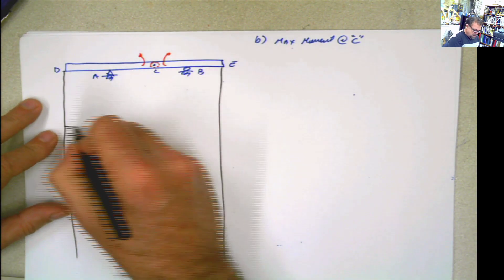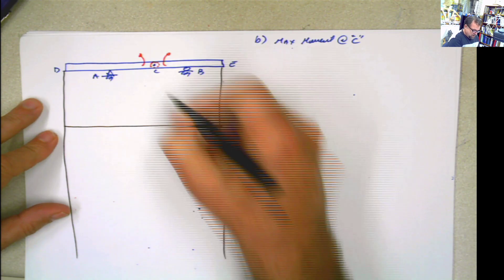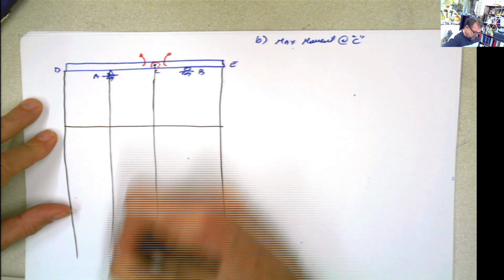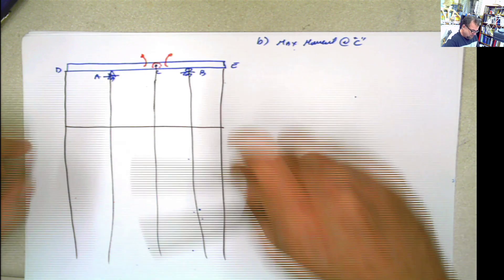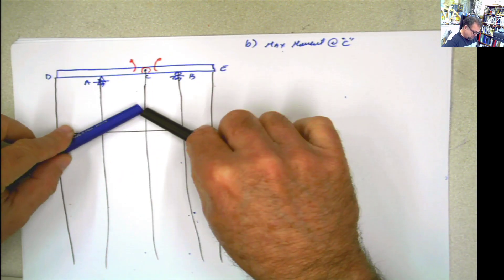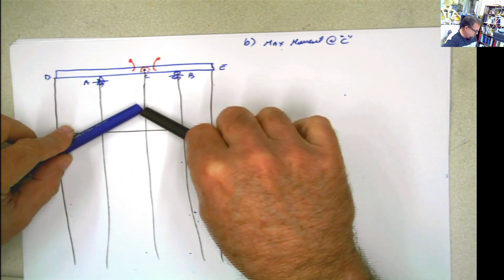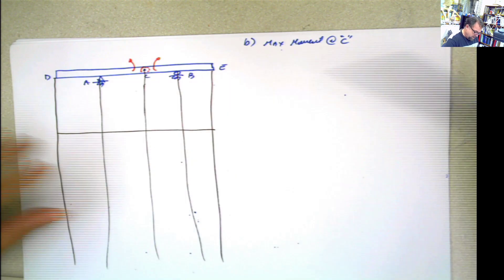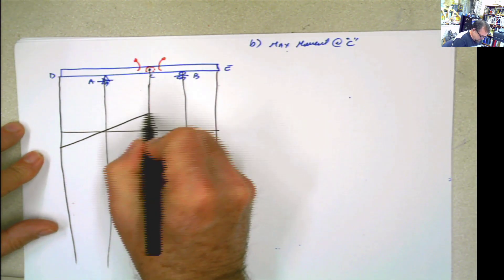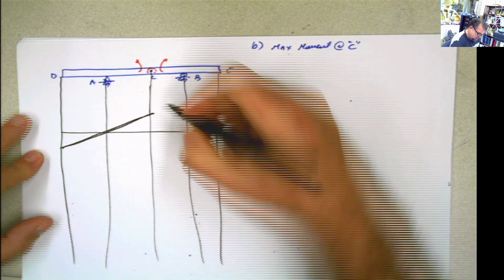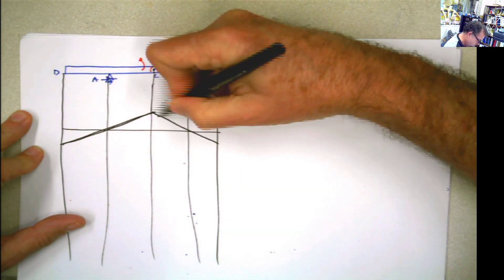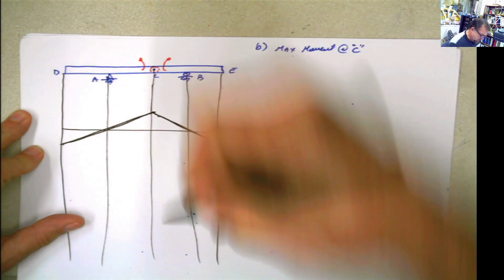Now, if this is like that and I'm releasing it at this point, it's pivoting over these two points. When I do that and apply that rotation, this is going to happen.